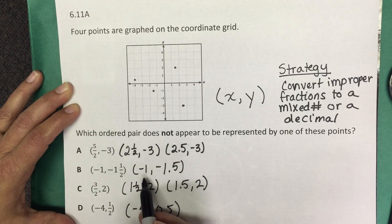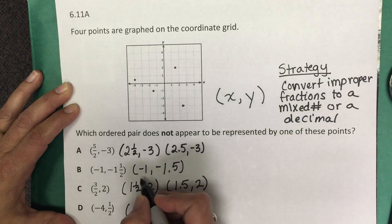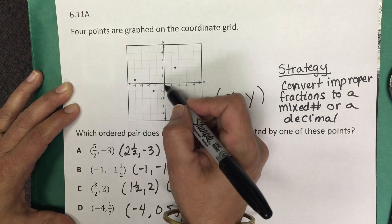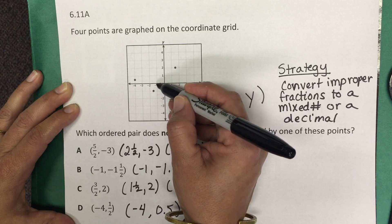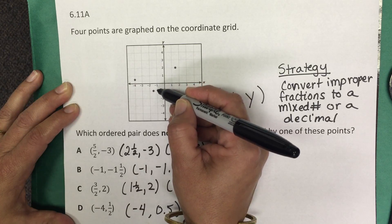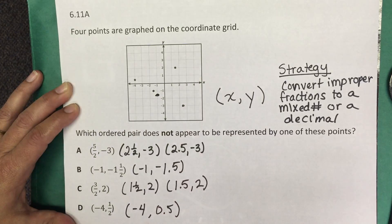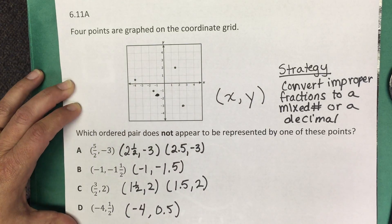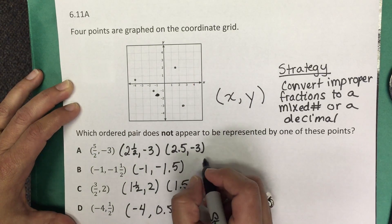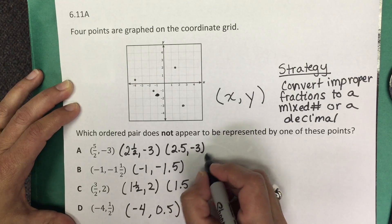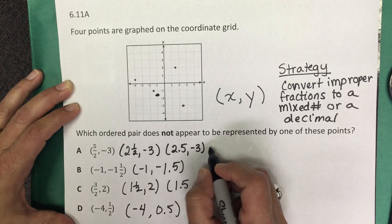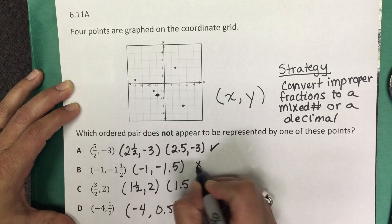Okay, answer choice B is negative one and negative one and a half, or negative 1.5. So we're going to move one direction left from the origin and then one and a half units down. That would put us right about here. Well, I don't see a point there. I just added a point, but the point was not originally graphed there. So right now, this one does not appear on the graph. Answer choice A did; I don't see answer choice B.